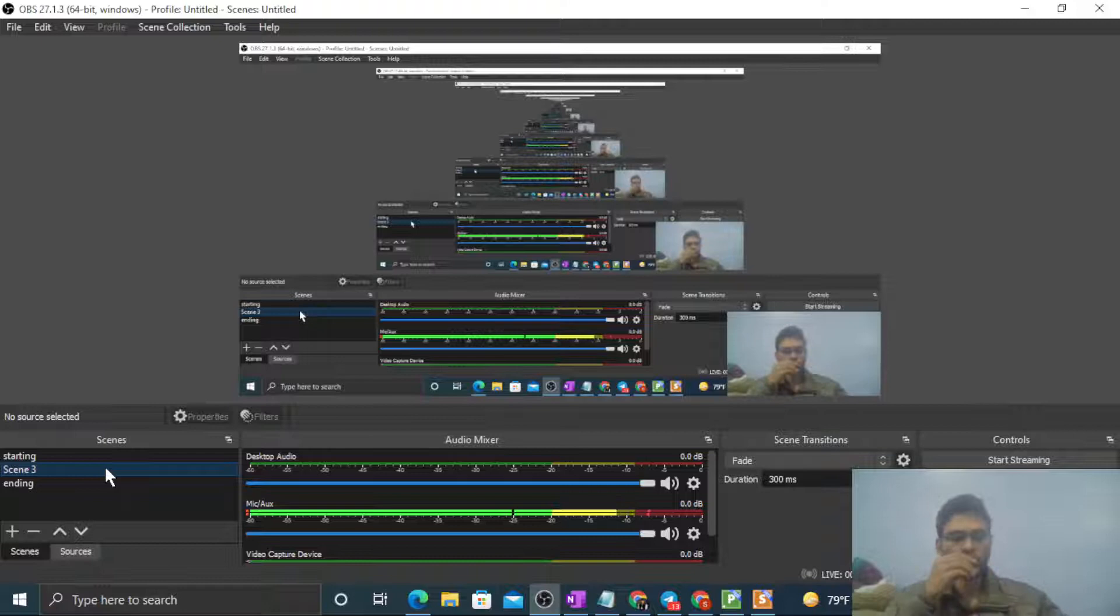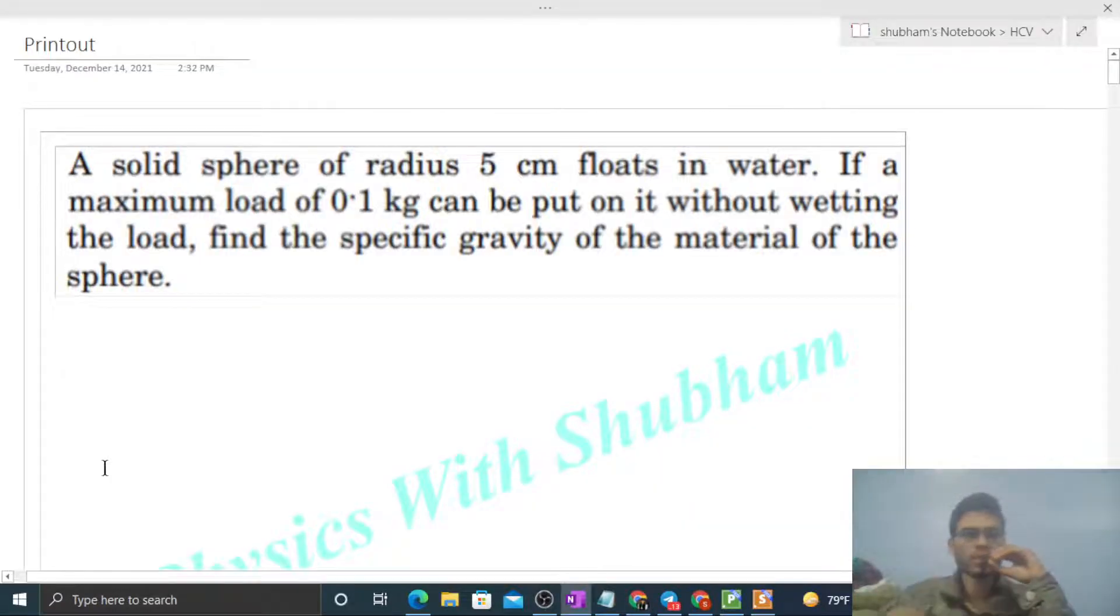Okay, hi everyone. So today let's discuss one interesting problem. It says a solid sphere of radius 5 centimeter floats in water. If a maximum load of 0.1 kilogram can be put on it without wetting the load, find the specific gravity of the material of the sphere.